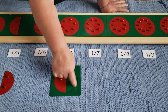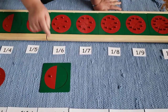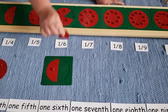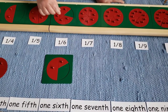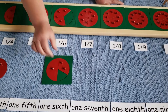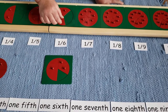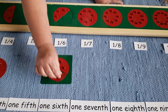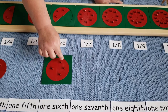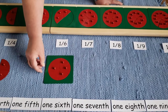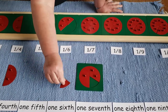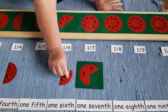Let's try and see if we can get sixths to fit in here. One sixth, two sixths, three sixths. Look — three sixths is equal to one half! Let's put them over here like this.